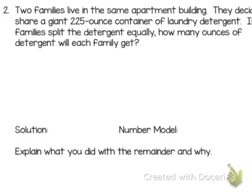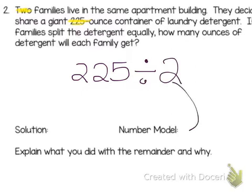Number 2 says two families live in the same apartment building. Immediately, I am going to highlight two. They decided to share a giant 225 ounce container of laundry detergent. I am going to highlight 225. If the families split the detergent equally, how many ounces of detergent will each family get? Like with subtraction, with division, we want to divide the bigger number usually. What are we splitting? The 225 ounces. And we are dividing it or splitting it by the two families. So your number model is right there.